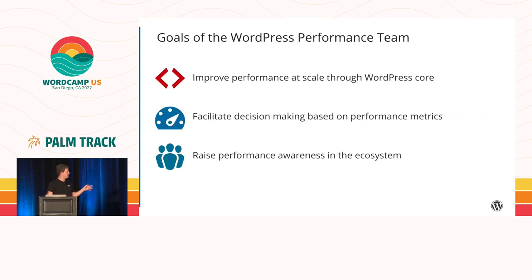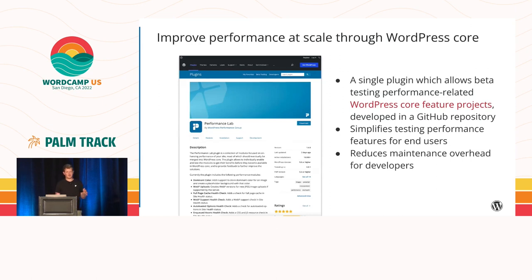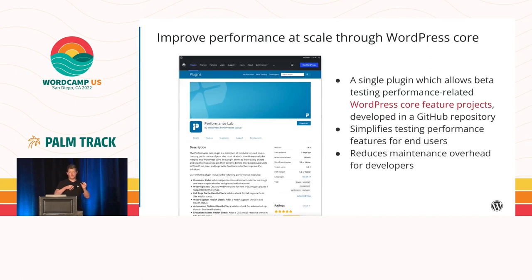The primary project the WordPress performance team has been working on is the Performance Lab plugin. This is not your regular performance plugin — it is effectively a beta testing plugin for performance-related feature projects. WordPress has for a long time had this concept of feature projects, and we've established this plugin to make it easier to work on any performance-related feature projects, which are included in this plugin as individual modules.